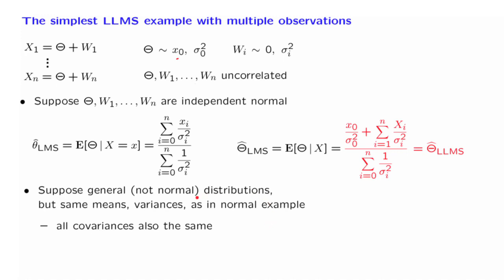So whether we have normal distributions or non-normal distributions, as long as we're making enough assumptions that fix all the means, variances, and covariances of interest, we should be getting exactly the same solution. Therefore, this solution remains valid for the case of general random variables as well.